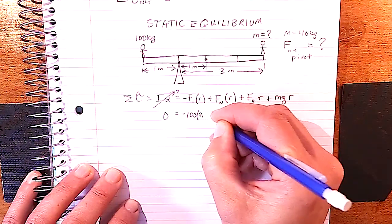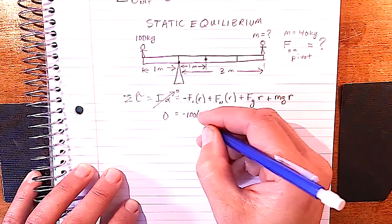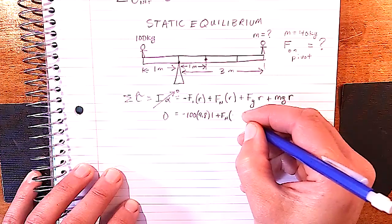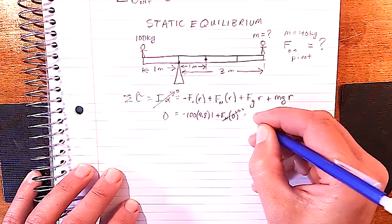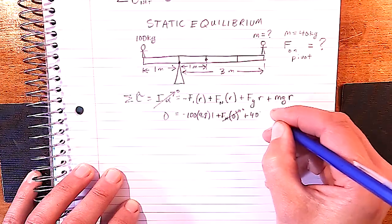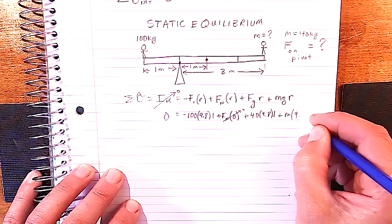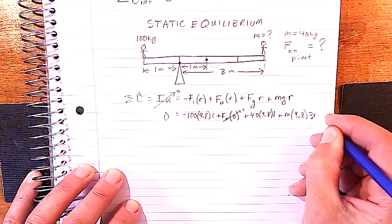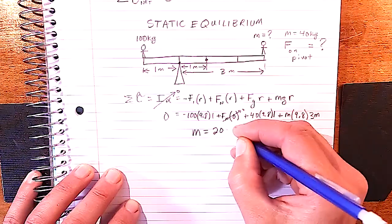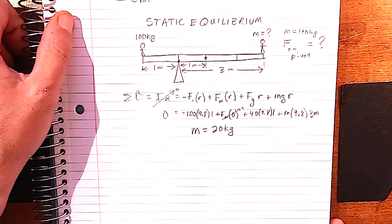Plugging in numbers: the system isn't angularly accelerating so that's zero. We have minus 100 times 9.8 for the first kid at a radius of 1 meter, the pivot's normal force at the origin cancels out, plus 40 times 9.8 for the beam's center of mass at 1 meter, plus the unknown mass times 9.8 times 3 meters. Solving for m gives a mass of 20 kilograms for the other kid.